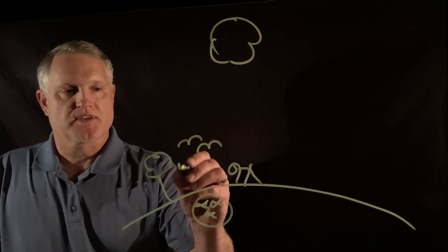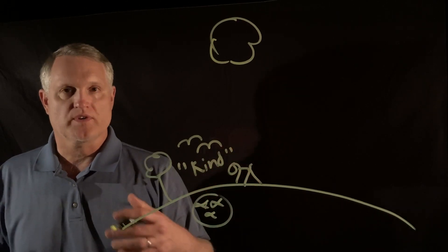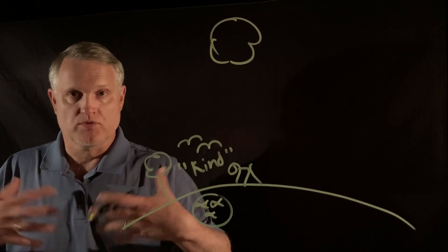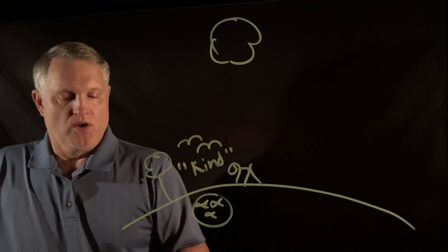And then he says very interestingly, several times in fact, that he would create them according to their own kind. And what he means of course is that they're going to reproduce after who they are and stay who they are and relate to their own kind.